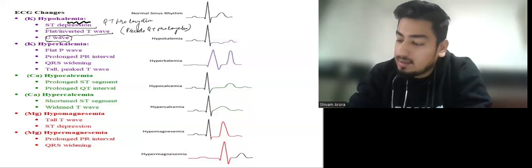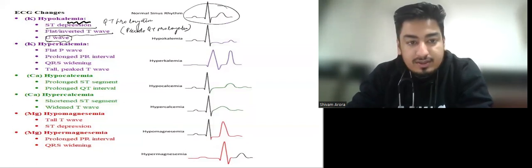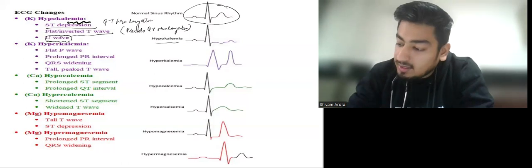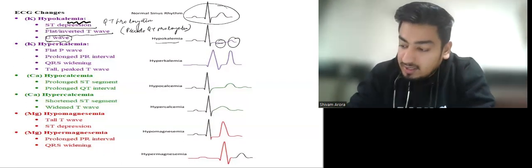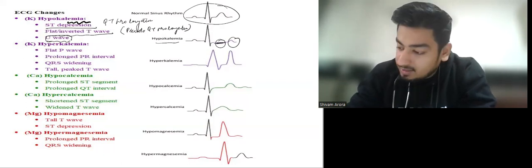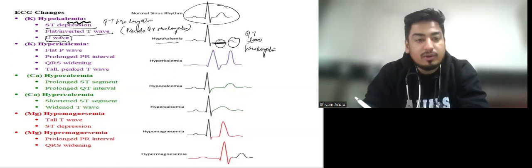As you can see in the parallel image, this is a normal ECG. This is the ECG of hypokalemia in which we have inverted T wave and a prominent U wave. This is a flat T wave. This is why we have QT prolongation like this. We call it pseudo-QT prolongation.